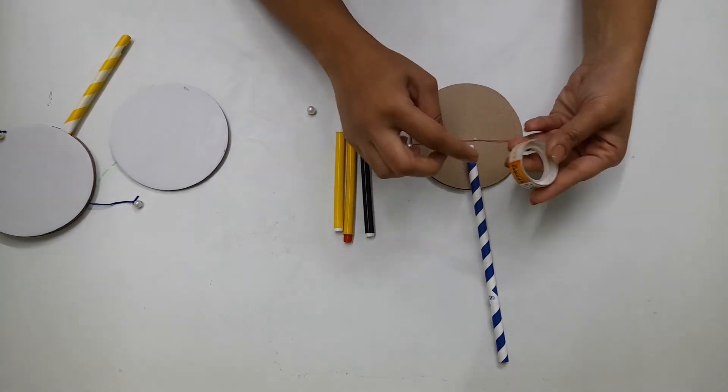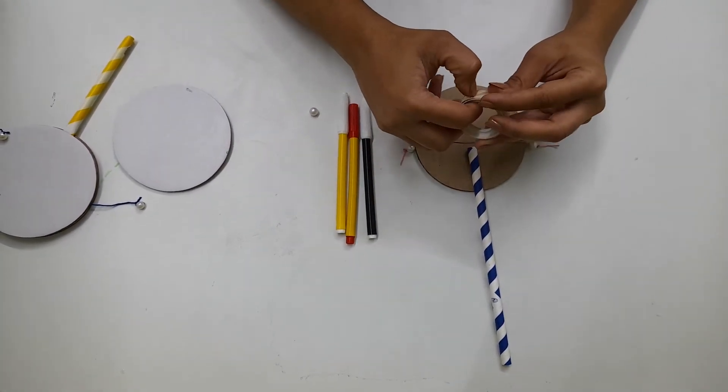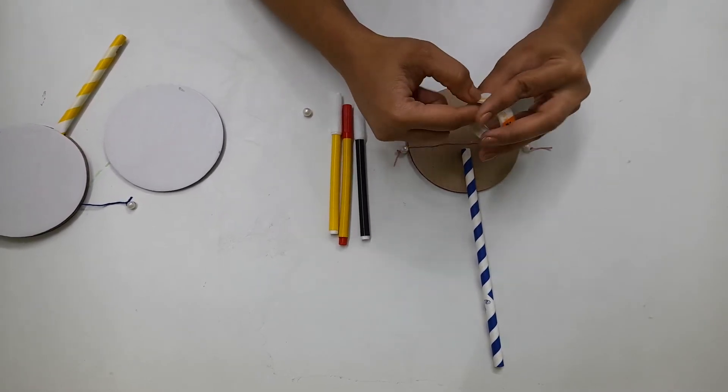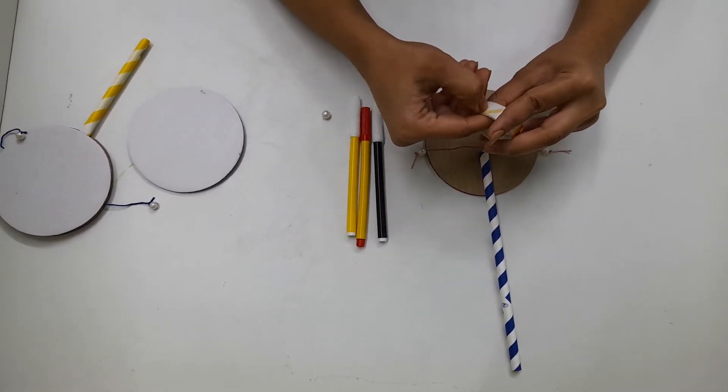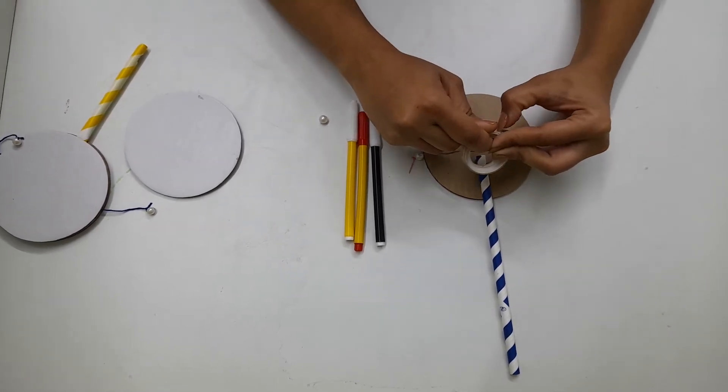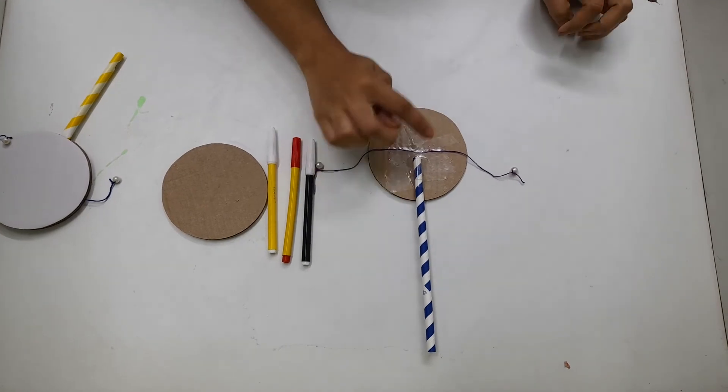So you can use either cello tape, the given cello tape, or glue for this. Now after fixing the straw and thread, you cover it with another cardboard piece.